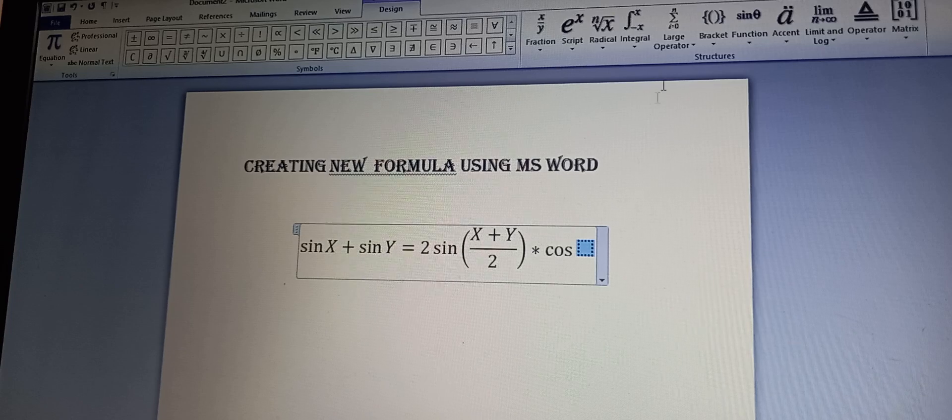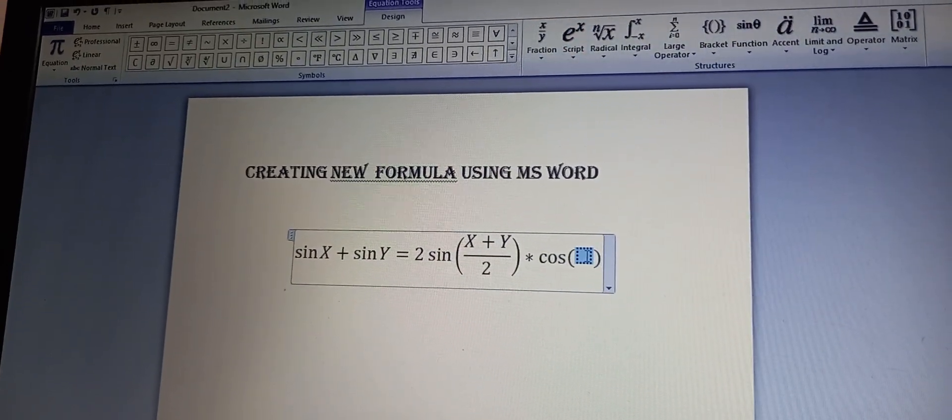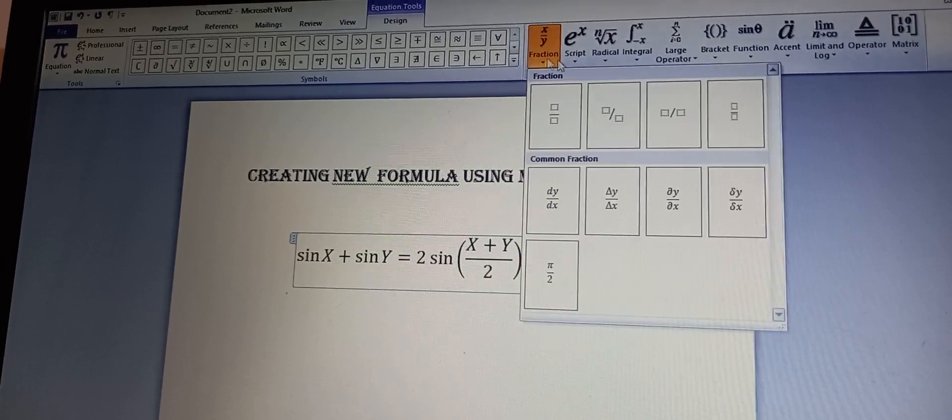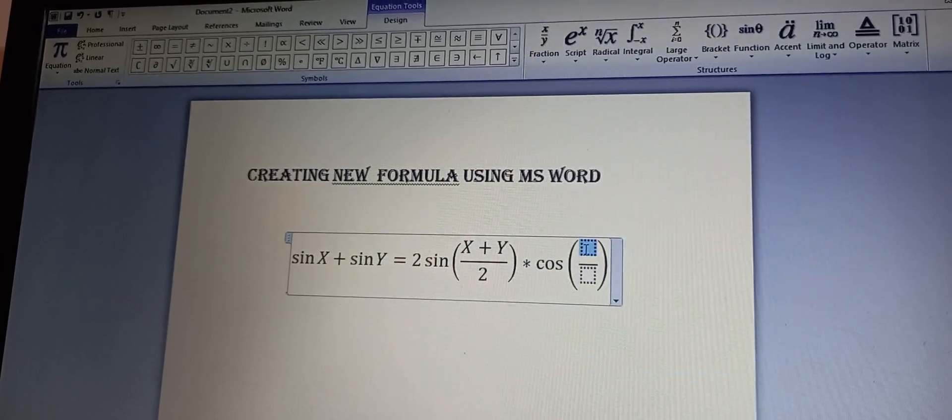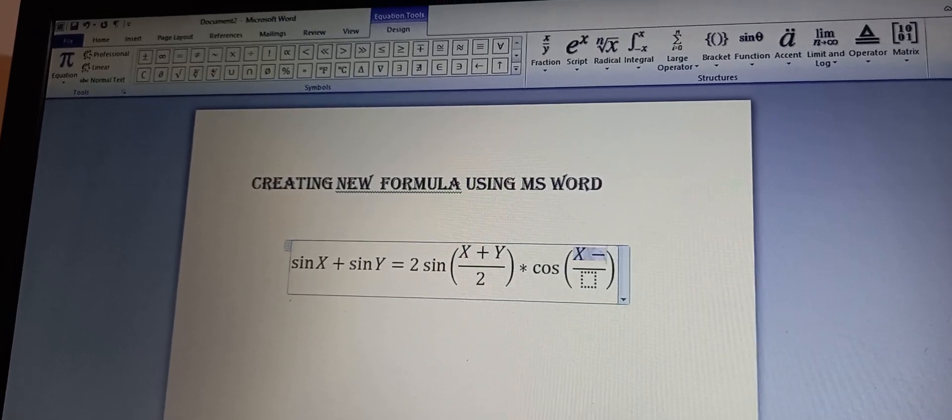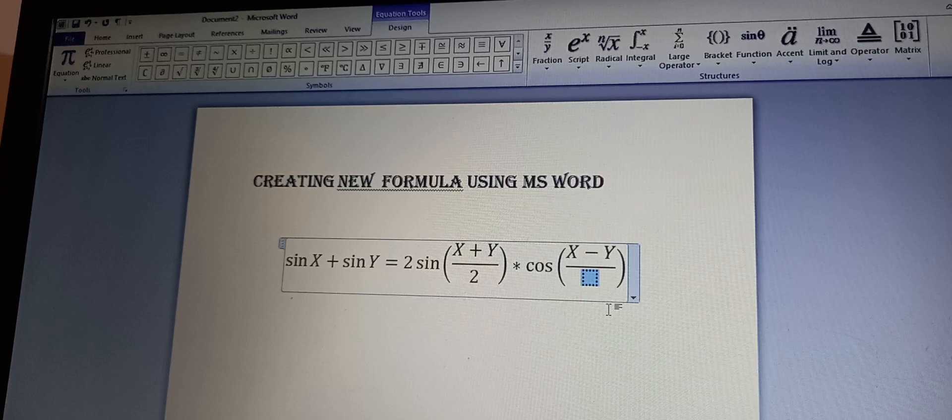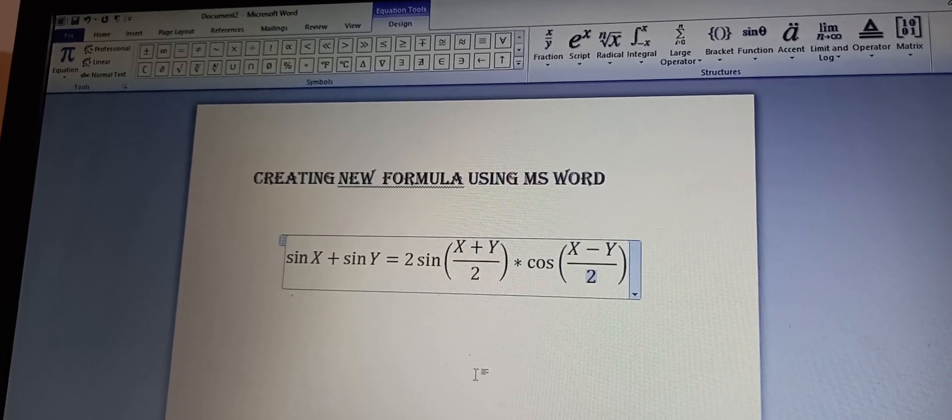Select the box, add bracket, then select the box and write x minus y. Select the box and put 2.